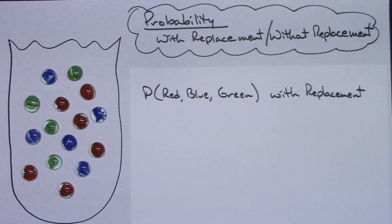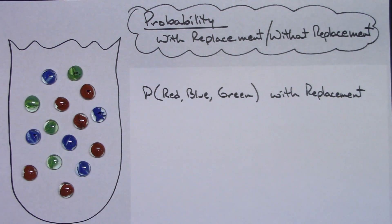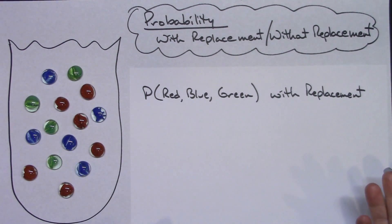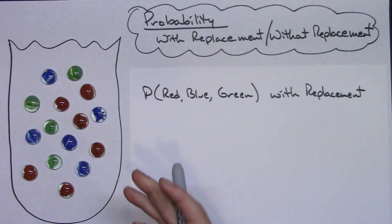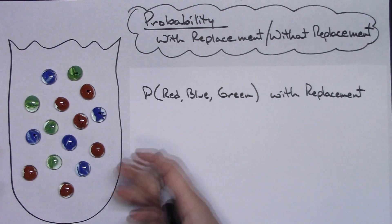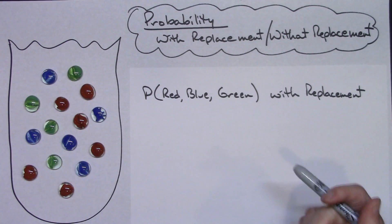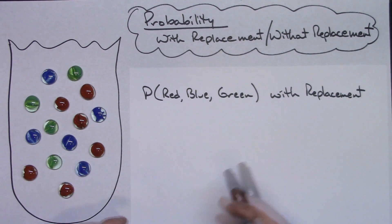In this video I'm going to be taking a look at a couple different probability examples — one with replacement and one without replacement. The easiest way to do this is to pretend we've got a bag full of marbles.